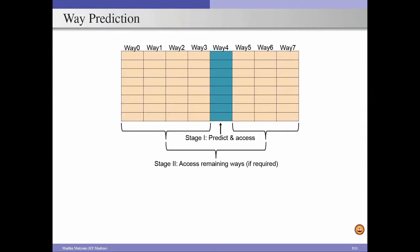The second technique to reduce hit time is way prediction. Consider an 8-way associative cache — if data is present in the cache, it will be in only one way of a particular set. If we know data can be in at most one way, why access all ways? Accessing only one way can be done in a direct-mapped mechanism, which takes less time than accessing all ways. But the prediction mechanism must be very accurate.